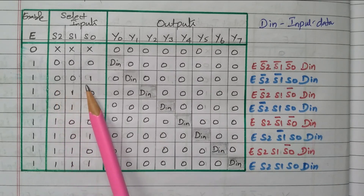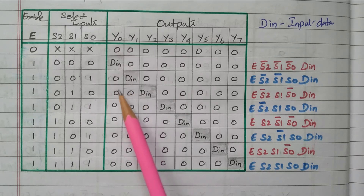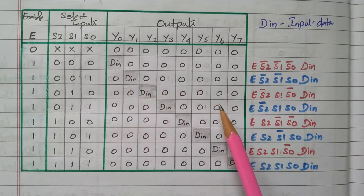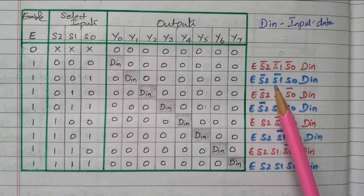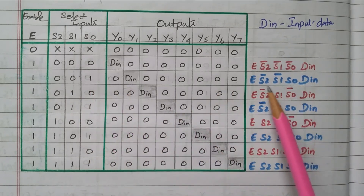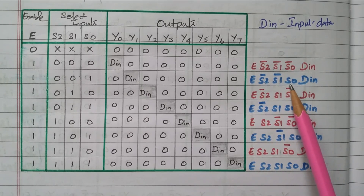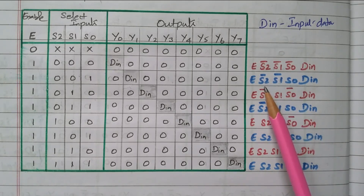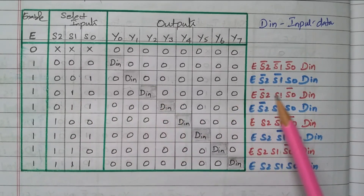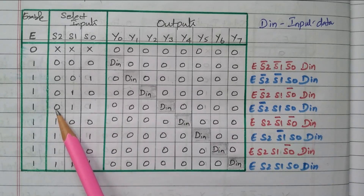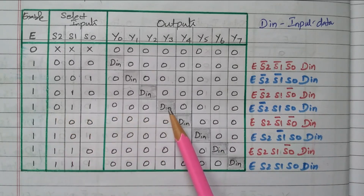For the combination 0,0,1, the data is available in the second position (Y1); the remainings are 0. The first two zeros are complemented, so they become 1, and the third is connected as-is since it is already 1. For 0,1,0 (third combination) data is available at the third position (Y2). For 0,1,1 (fourth combination) data is available at the fourth position (Y3); remainings are 0 accordingly.